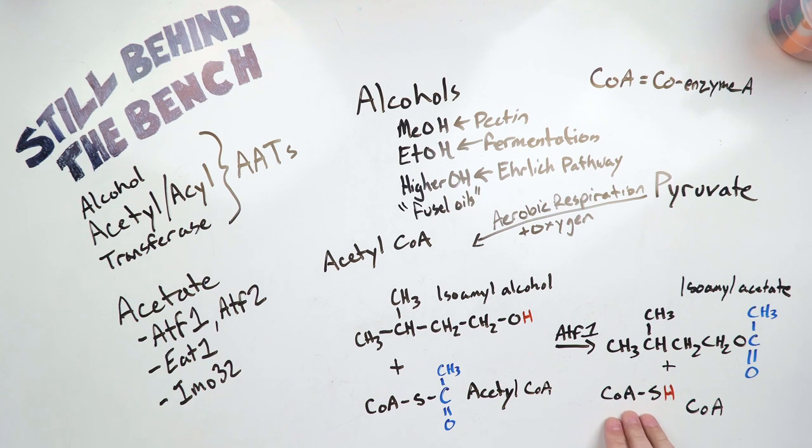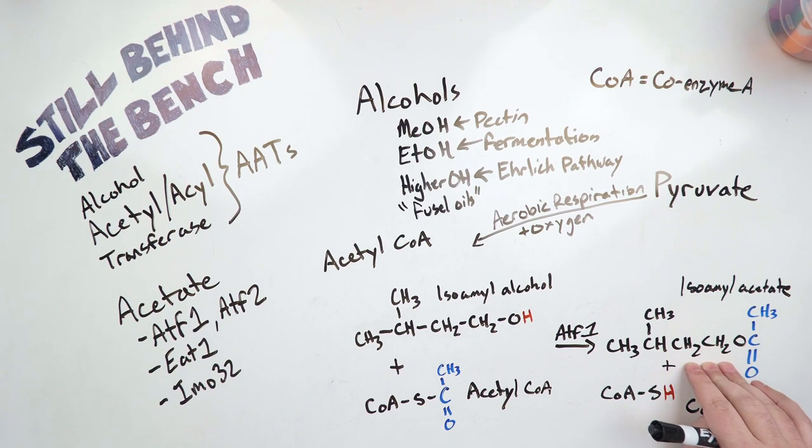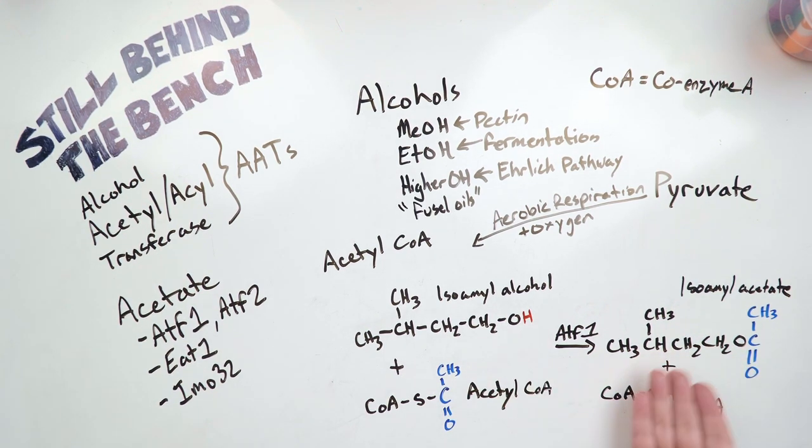So the acetyl group goes where the hydrogen was, and the hydrogen goes where the acetyl group goes. Now we have an acetyl group on our isoamyl that makes this isoamyl acetate. And then the hydrogen is now on the coenzyme A, so they just call it coenzyme A. So now this coenzyme A can go off to become another acetyl coenzyme A. And this isoamyl acetate usually gets expelled out of the cell. And that's really, it really is that simple.